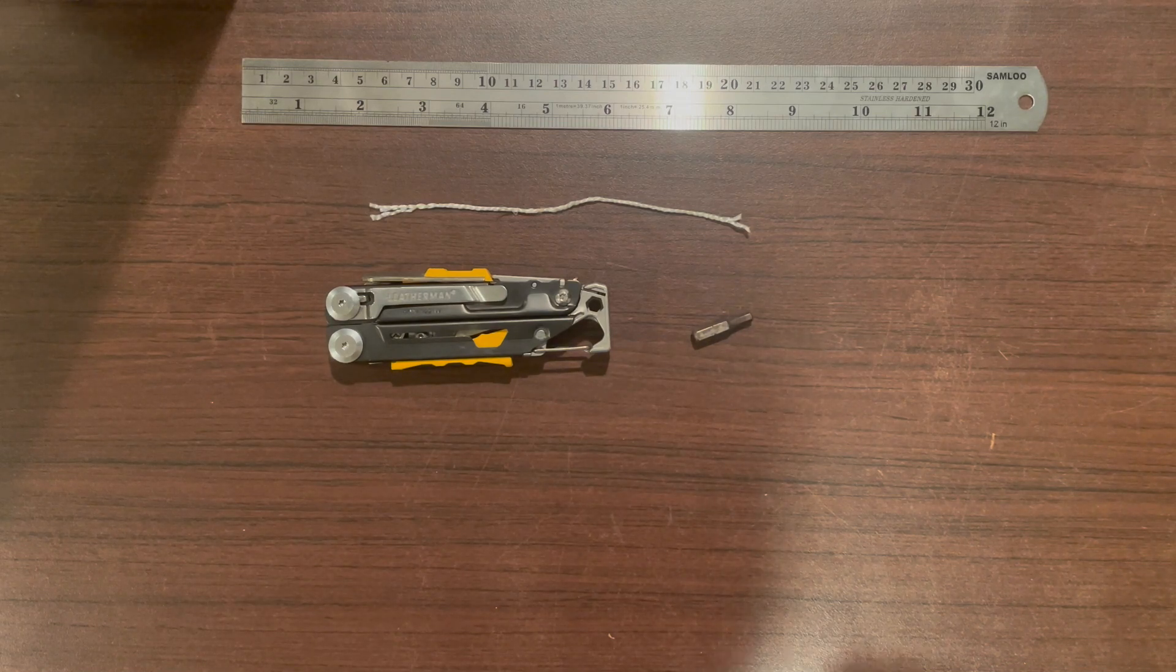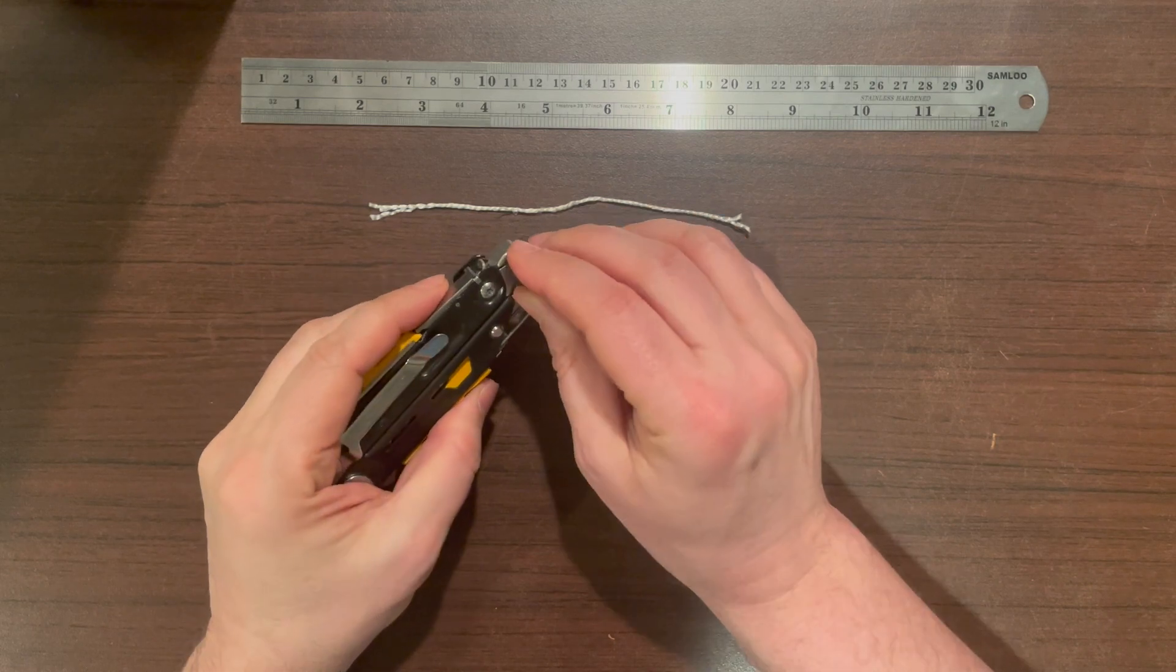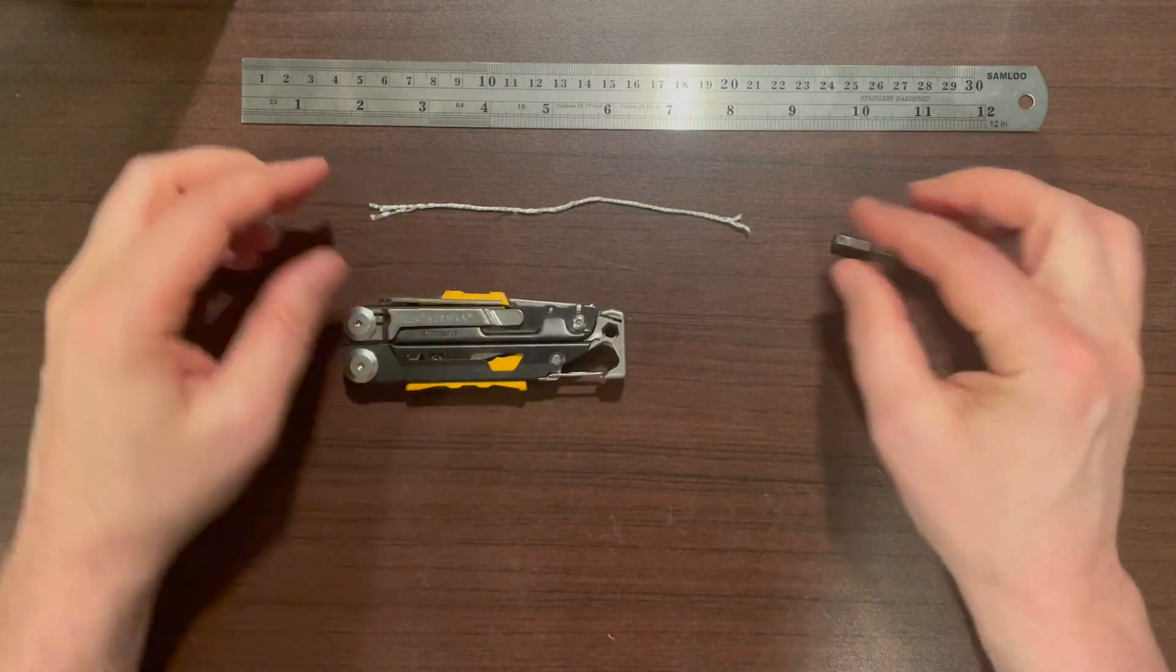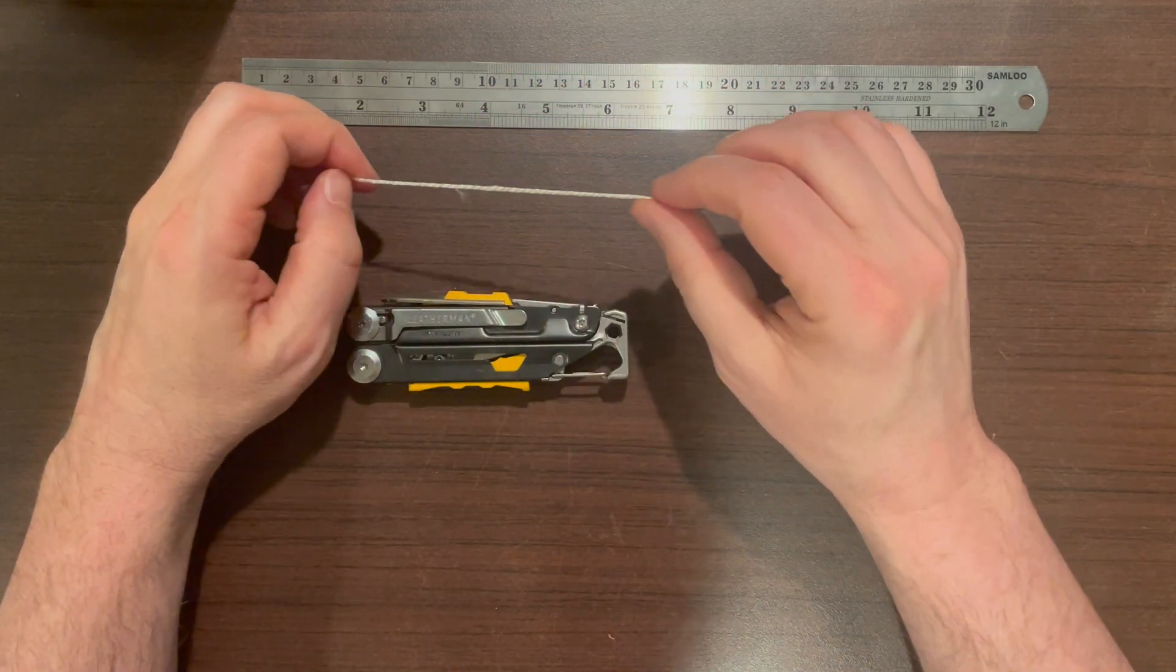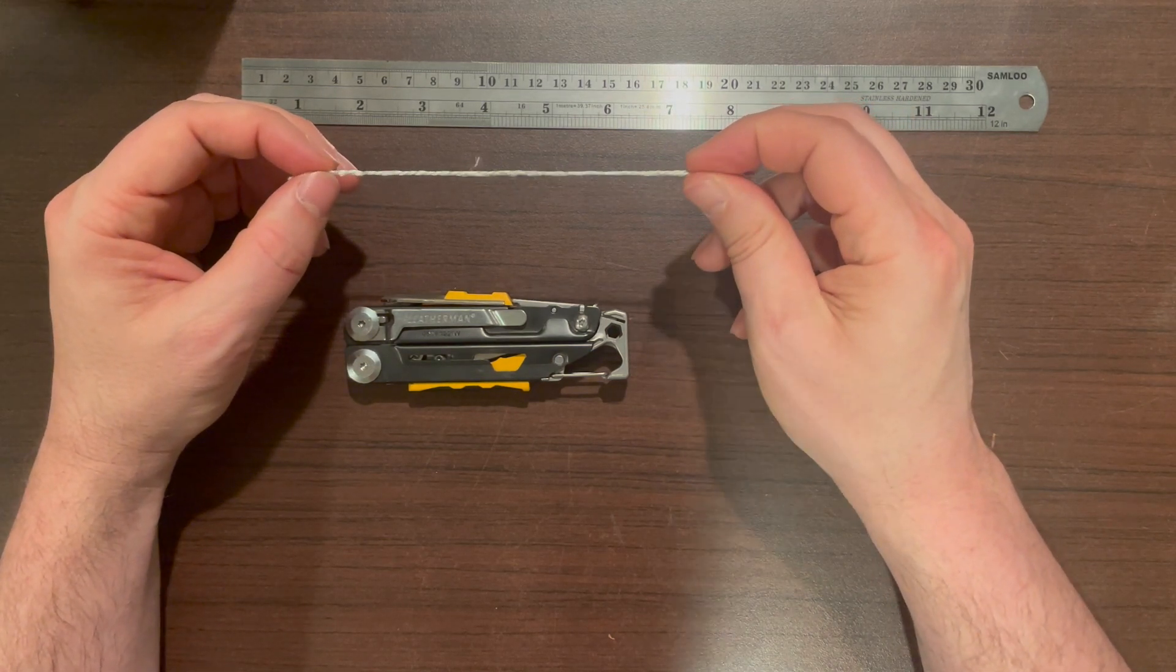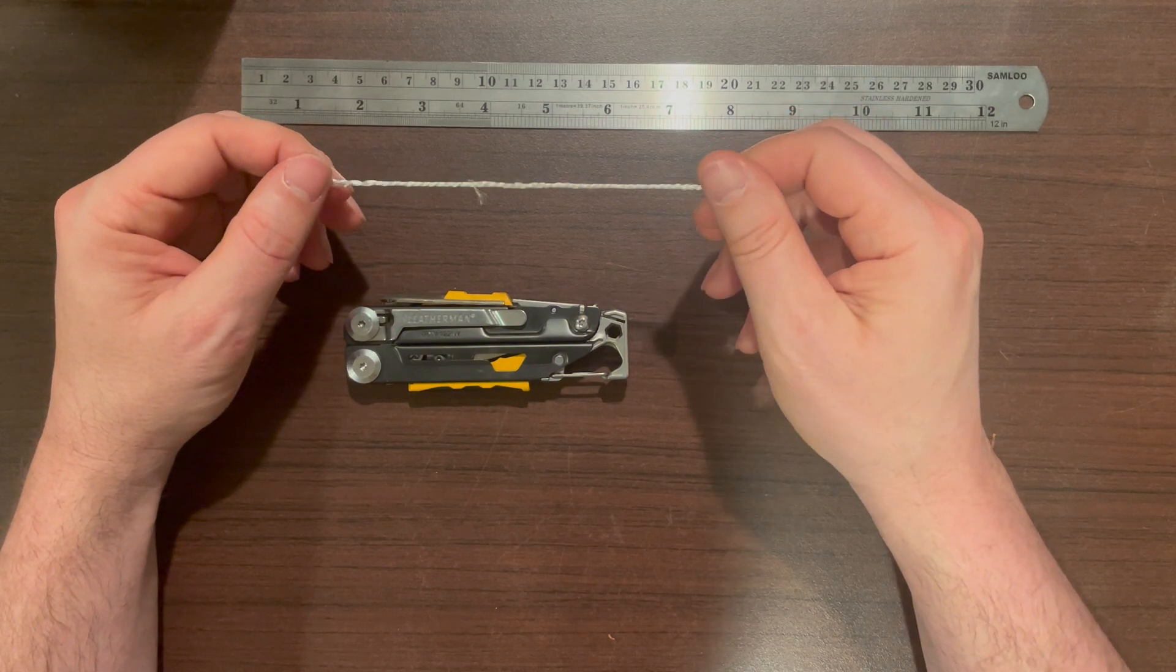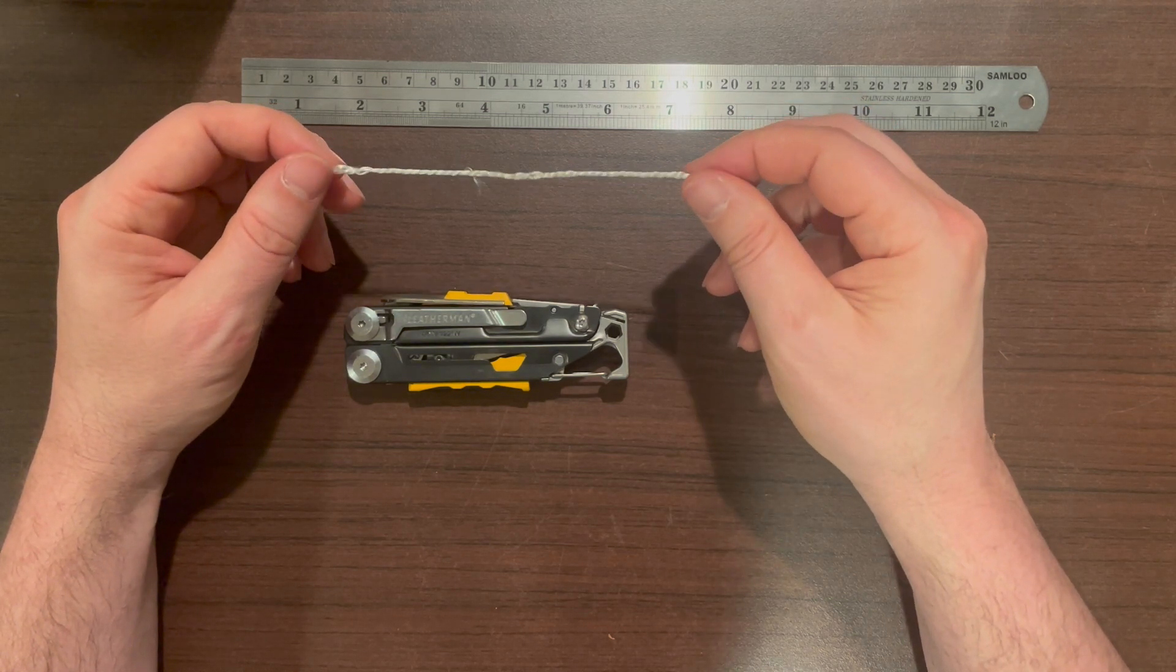We're going to show a method to keep the bits from falling out using a piece of string. This particular string is one of the normal threads from inside paracord, but pretty much any paracord is going to have something like this inside, and that's all you need for this.